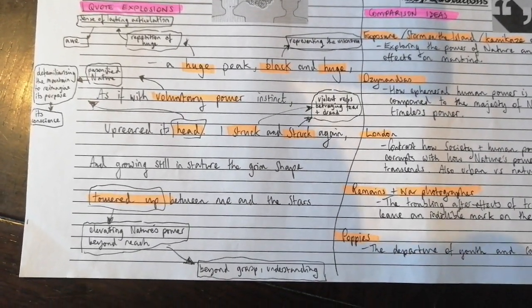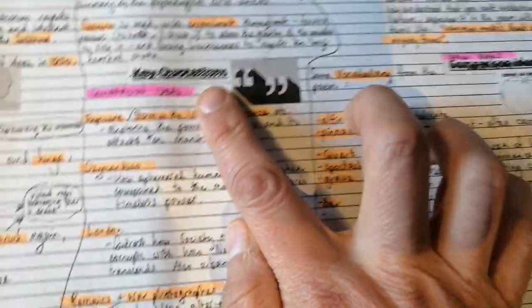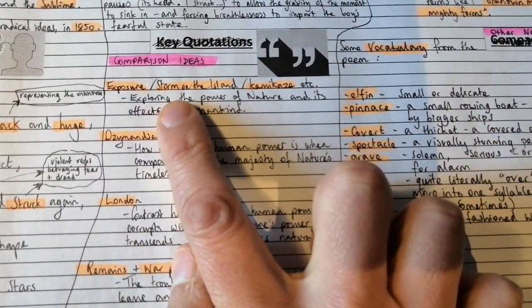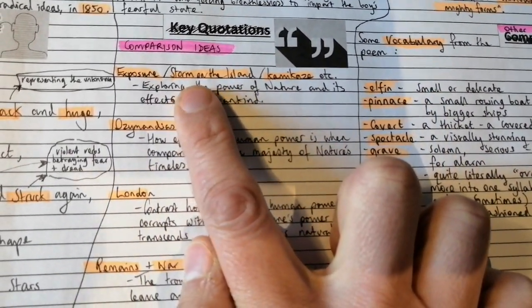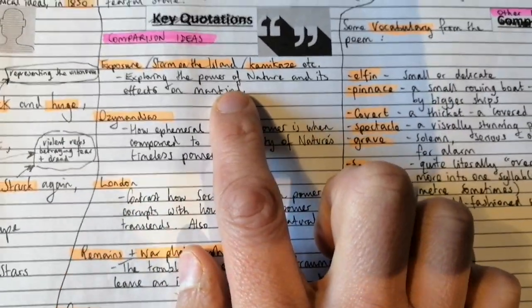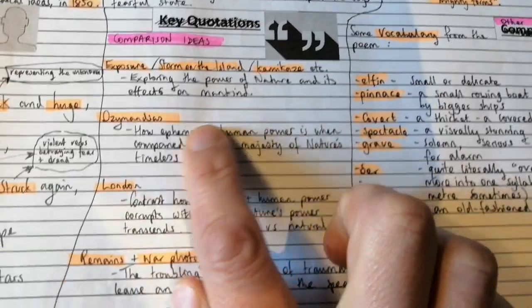And I've just gone a little bit further with my annotations there. And a couple of ideas. This isn't an exhaustive list of comparisons. You could compare it with any of those power of nature poems like Exposure, Storm on the Island, Kamikaze, etc. Because there is an exploration of the power of nature and its effects on mankind.